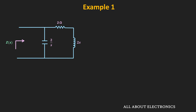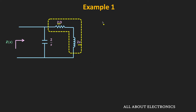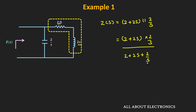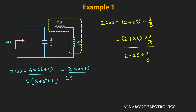For the given circuit, let us find the equivalent impedance seen across the two terminals. The 2 Ohm resistor and the 2S inductor are connected in series, and that combination is connected in parallel with the capacitor (2/S). So Z equals (2 + 2S) in parallel with (2/S), which gives Z = [4(S + 1)] / [S² + S + 1]. That is the driving point impedance of the circuit in the S-domain.